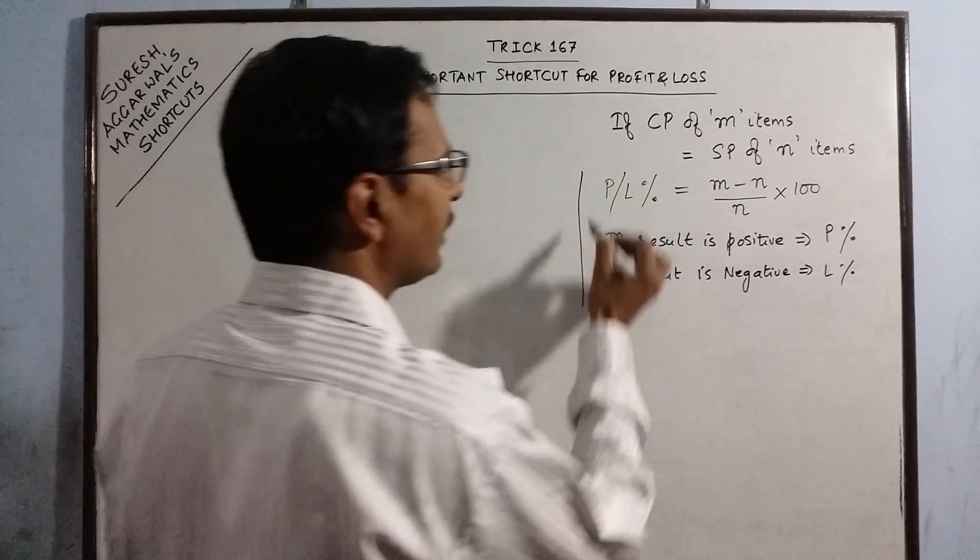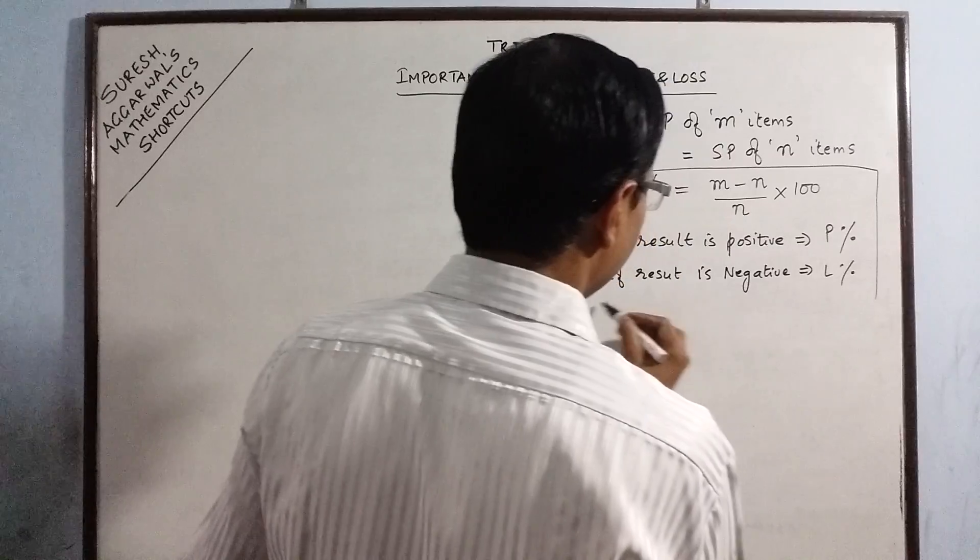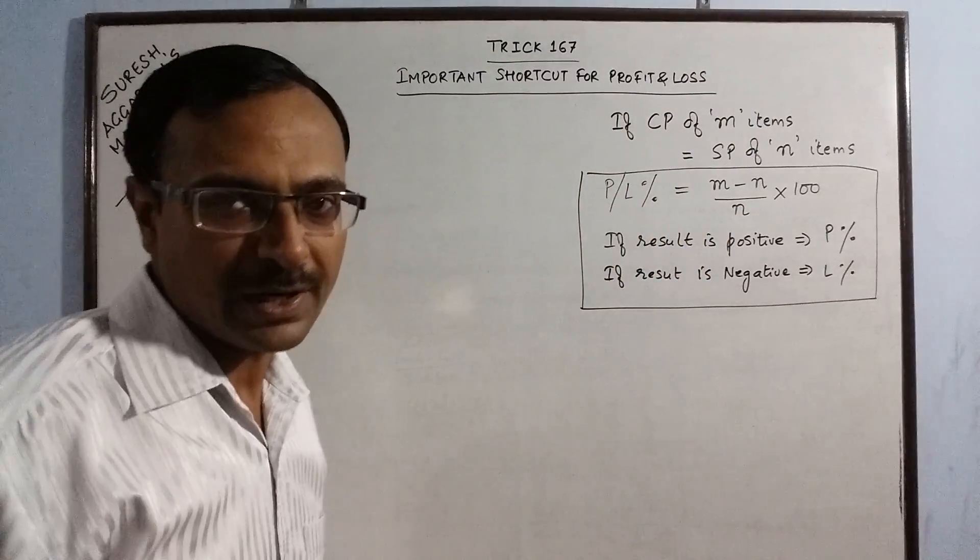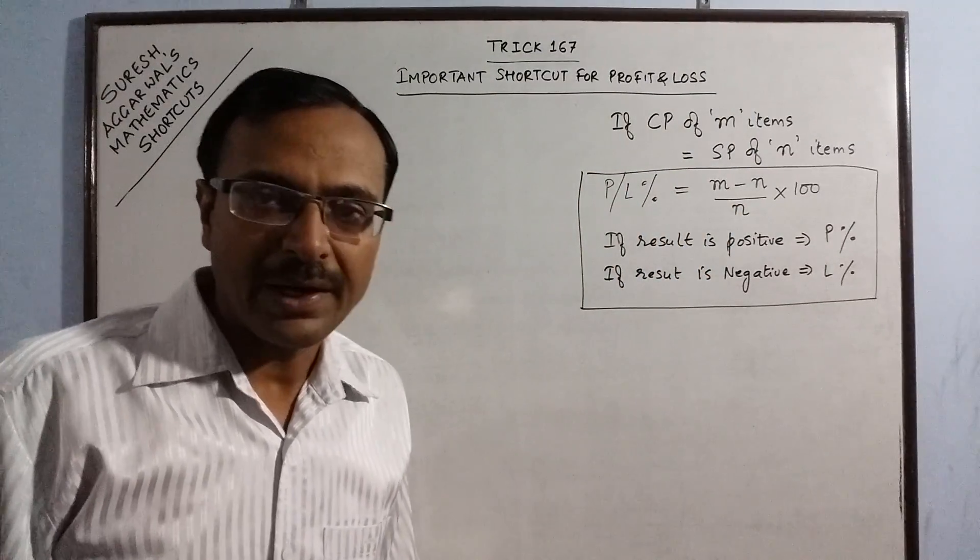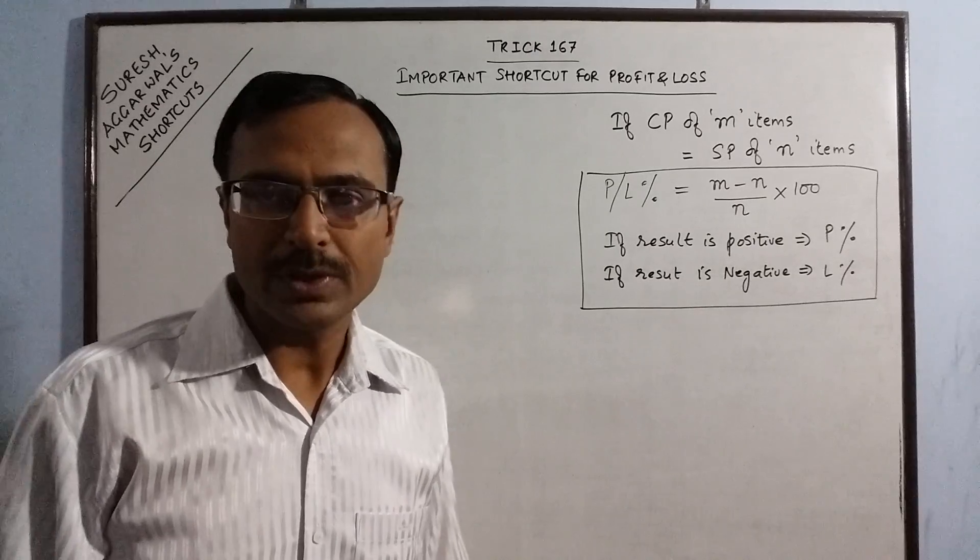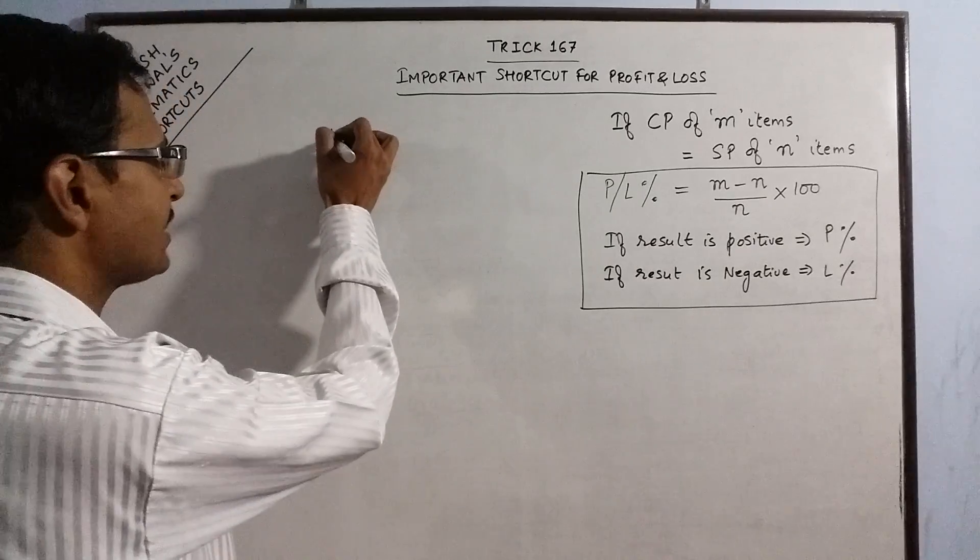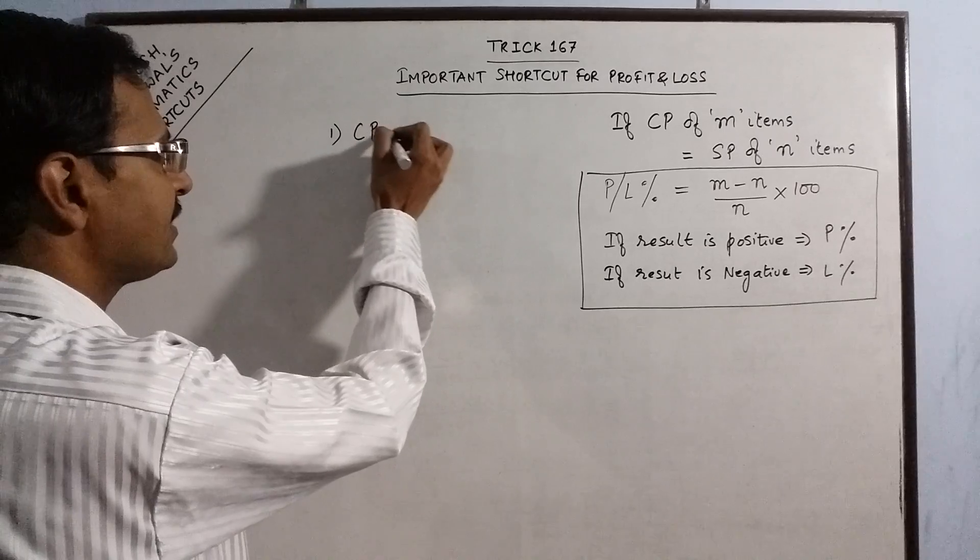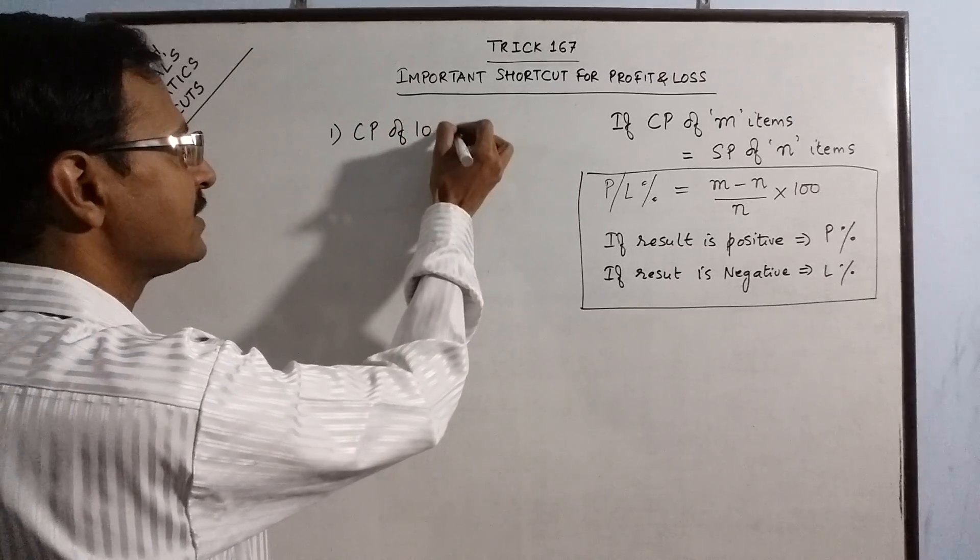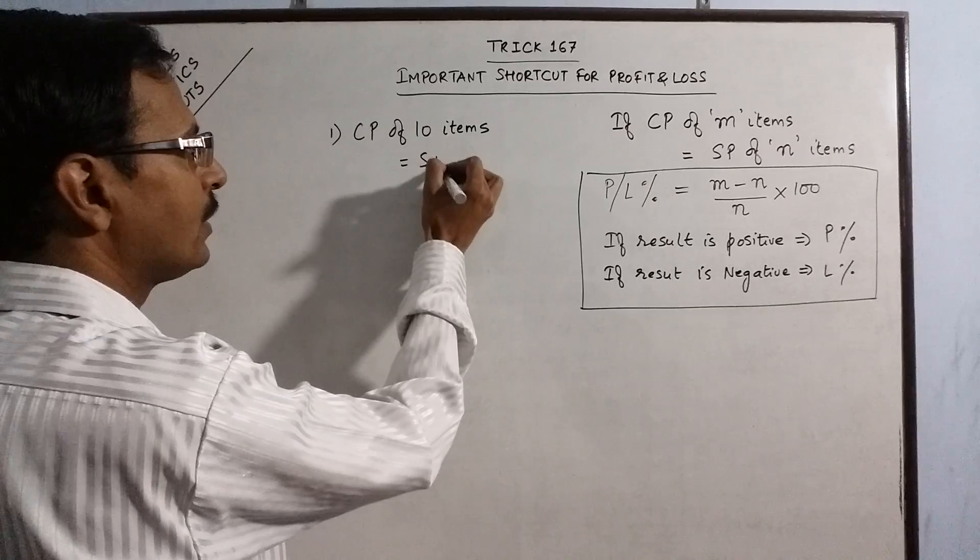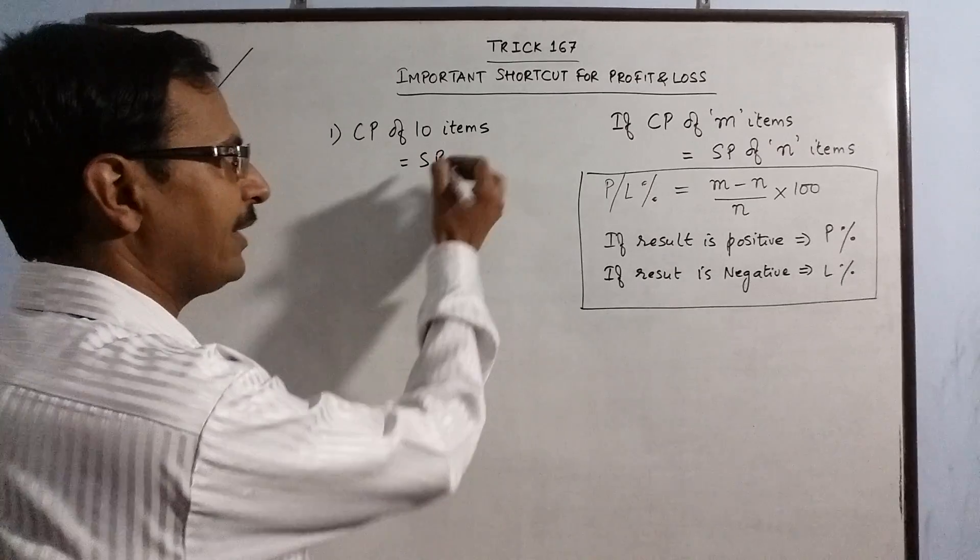So, very easy shortcut, very interesting shortcut and through this shortcut, you can solve these particular kind of problems. Now, let us try and understand these problems through two examples. Say, I am taking the first example when it is given that CP of 10 items is equal to SP of 12 items.